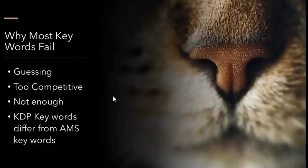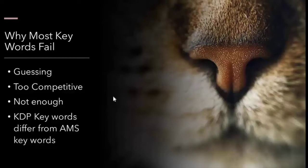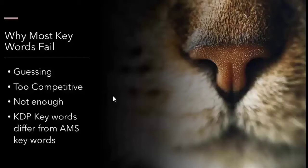The second reason keywords fail is that they may be too competitive. Looking at your book and thinking, this is a young adult book, so I'll put down young adult books, fantasy, or fantasy adventure — those keywords might just be too competitive. Now you're competing against really big names like Harry Potter. You don't want to fall into the category of really competitive keywords where your keywords need to be bid really high to make any impressions and then your ACOS is upside down.